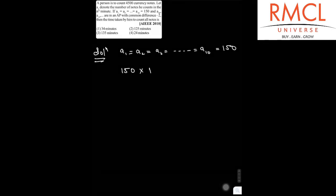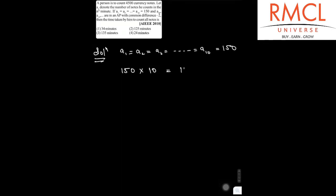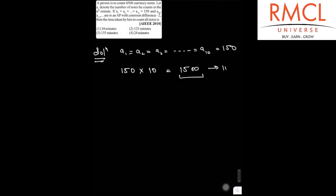So here is the solution. In this, it is given that A1 equals A2 equals A3 and so on equals A10, and that is 150. So that person will count 150 multiply by 10, that means 1500 currency notes in 10 minutes.